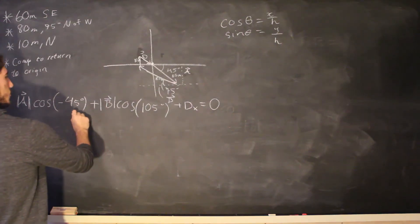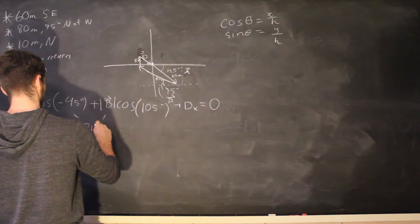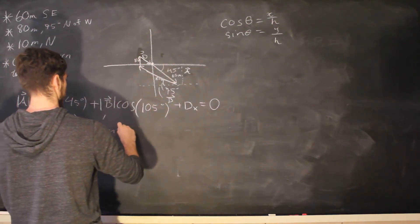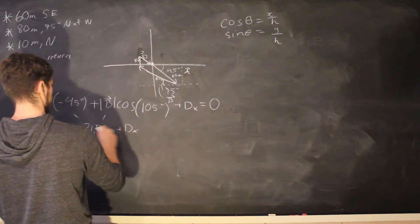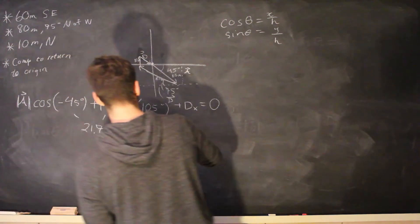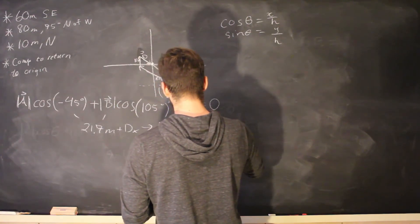So the combination of these two are 21.7 meters plus dx. And so dx is equal to negative 21.7 meters.